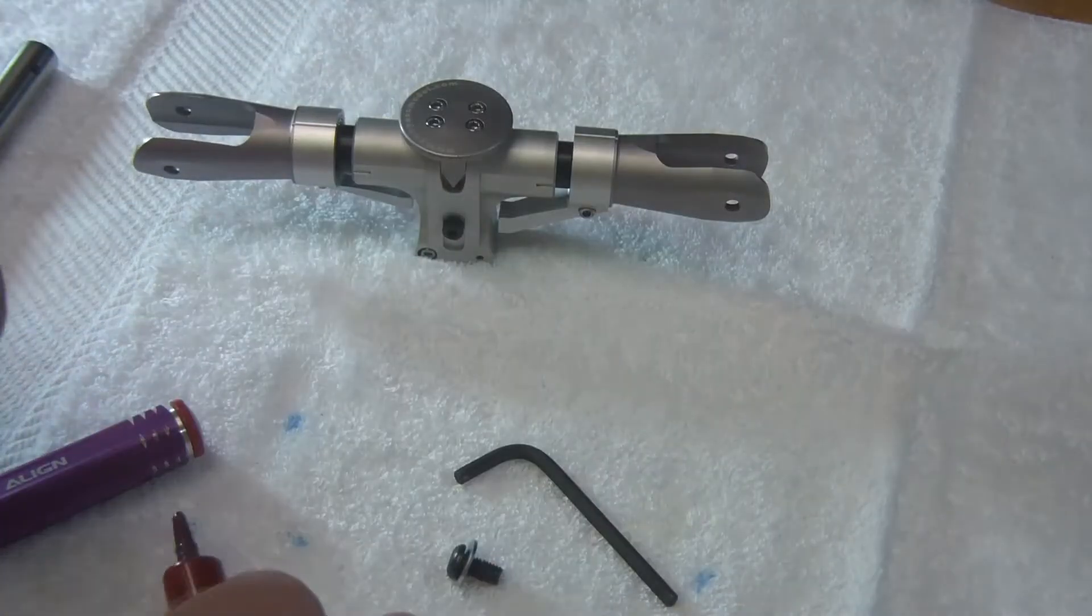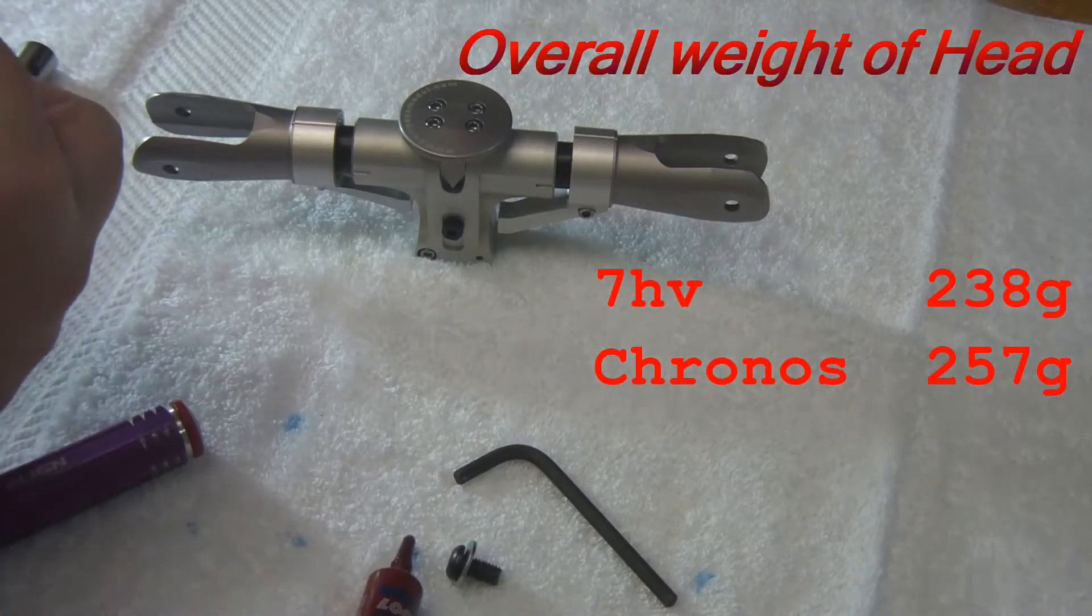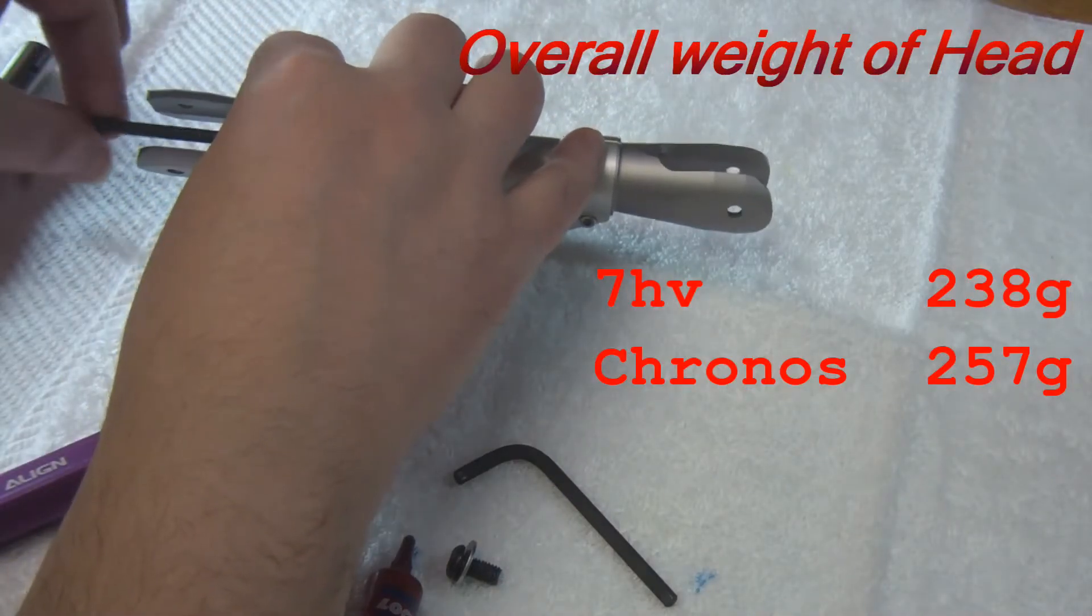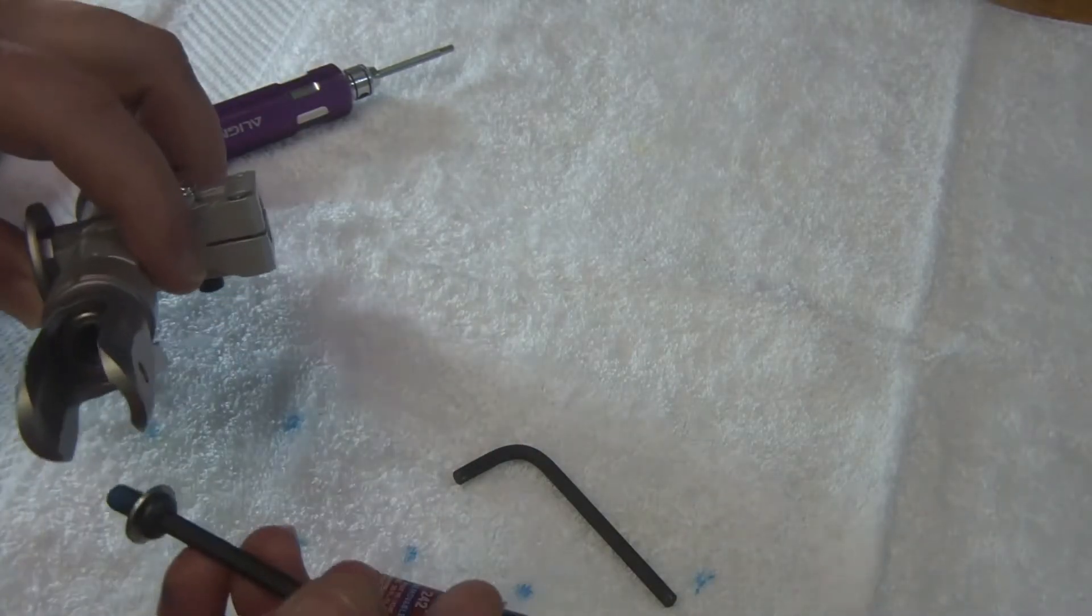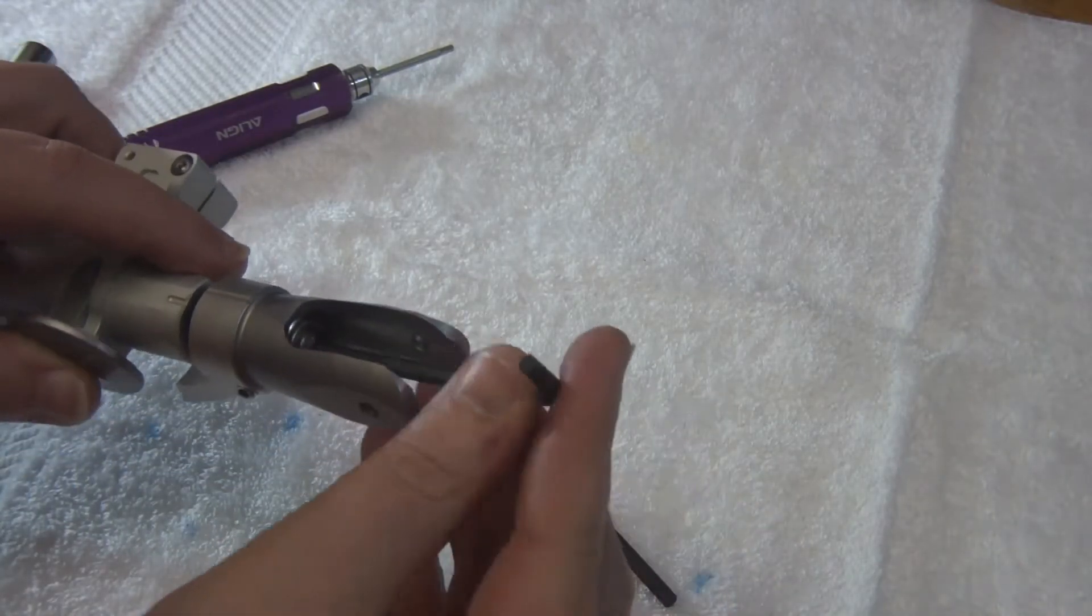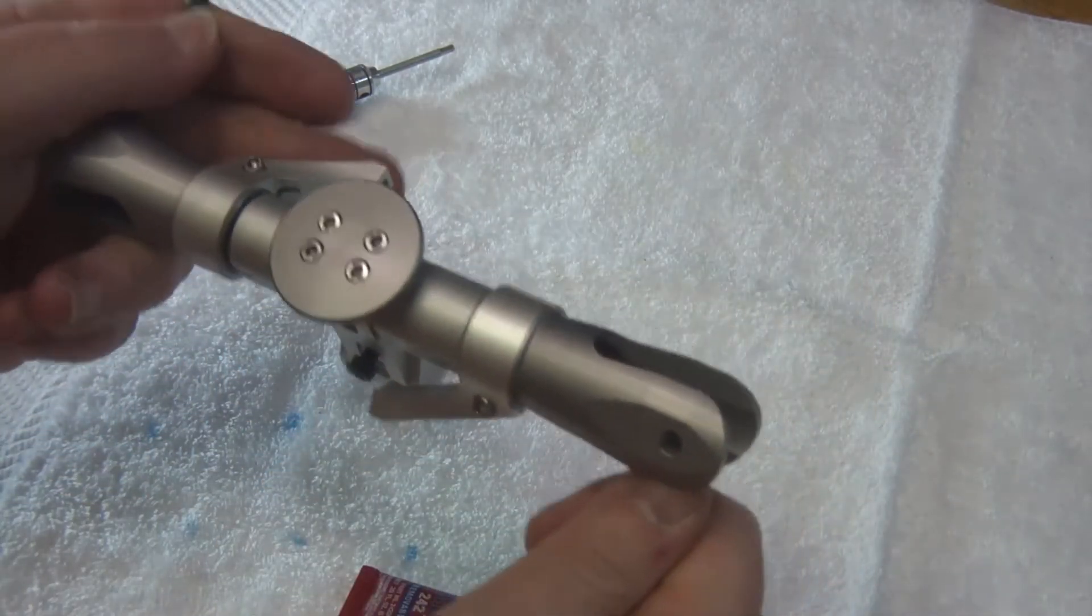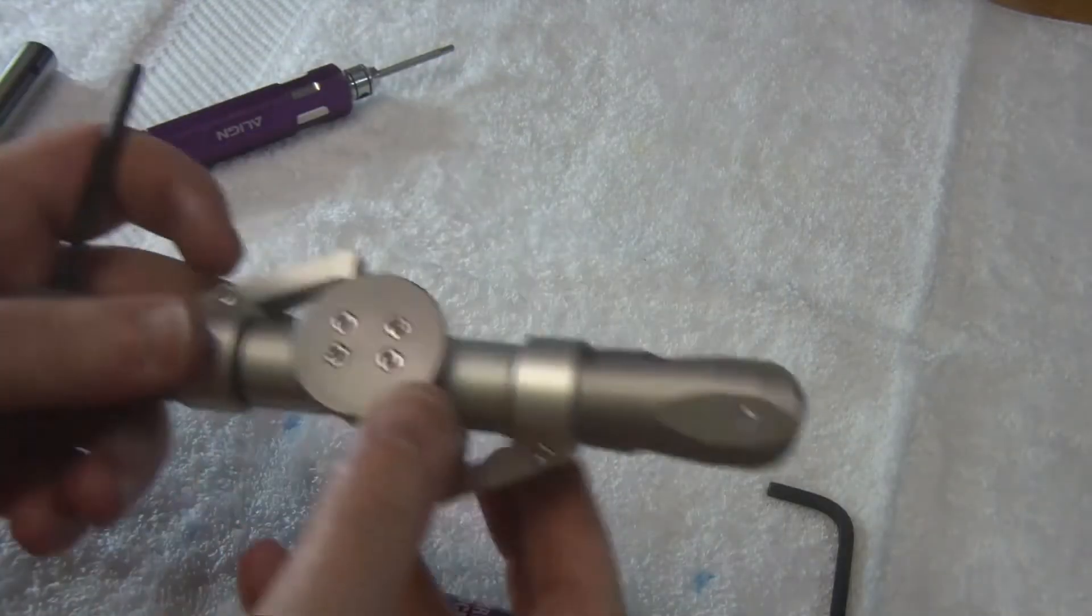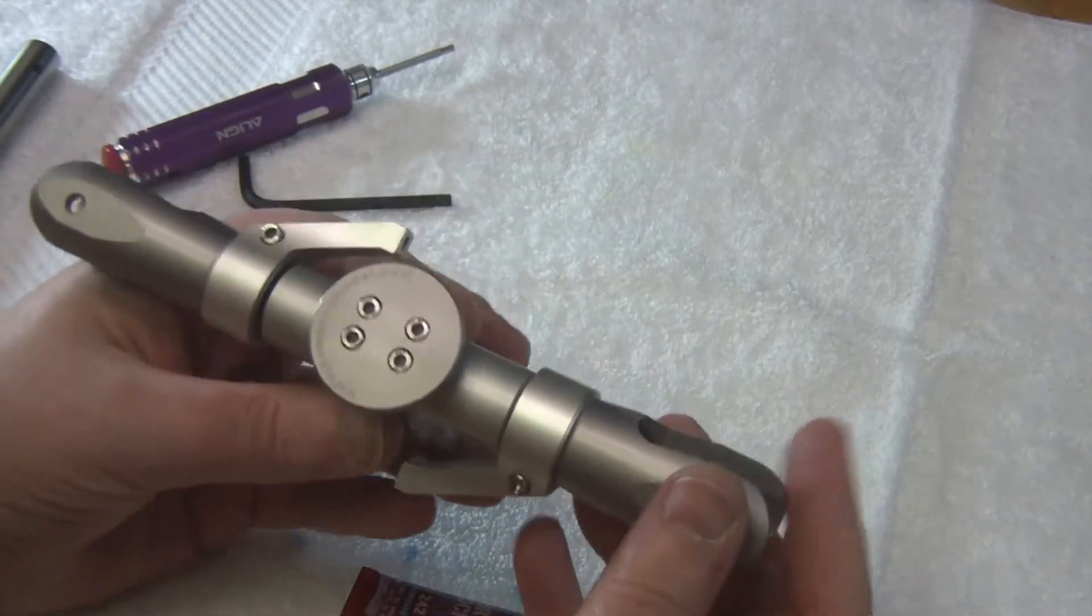Now with the threads cleaned, go ahead and put the grips on. Notice leading edge control. Grab your Loctite, get the one started. Once you've got it, go ahead and draw that up.